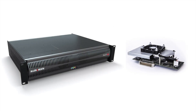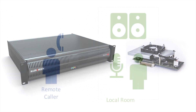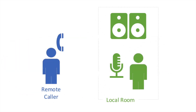The optional acoustic echo cancellation module for AHM 32 and 64 eliminates echo and feedback issues in teleconferencing applications, whereby the remote caller can hear a copy or echo of their own voice feeding back into the listener's microphone from the listener's loudspeakers.